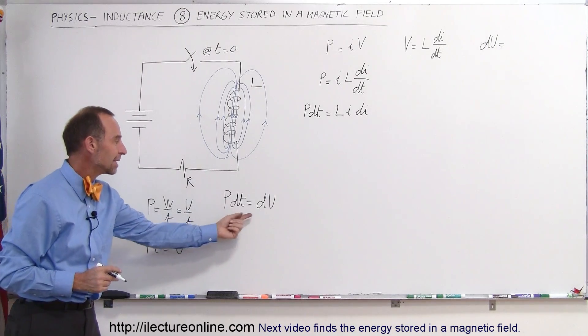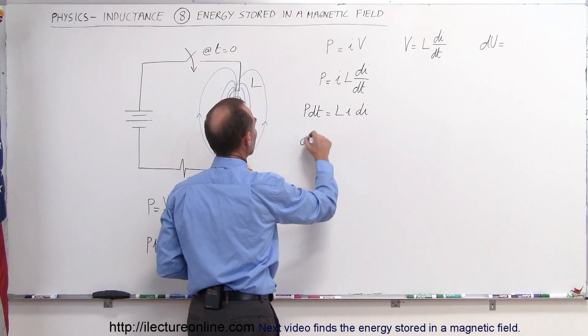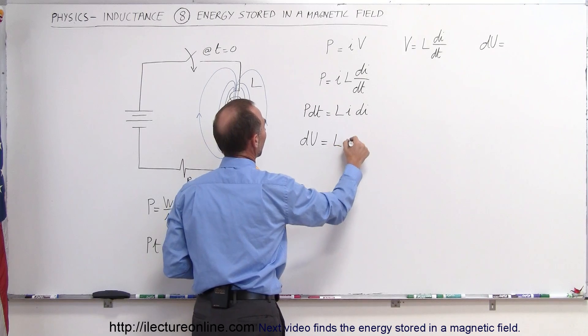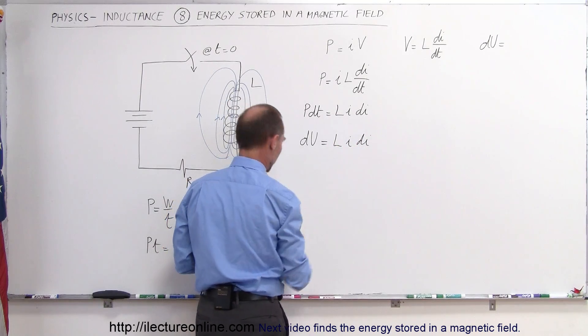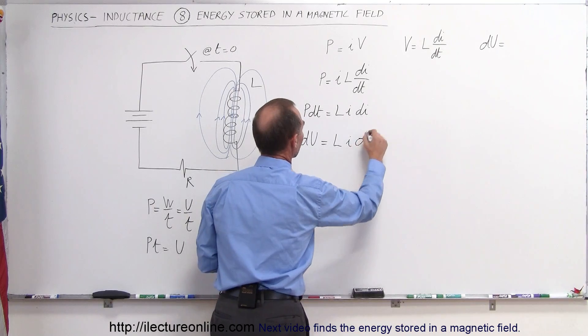Okay, so I can then say that P dt can be written as dU. I can then come up here and say, therefore, the amount of energy supplied to the solenoid is equal to L times I times dI. That's not a very good-looking dI. Let me rewrite that. There we go.